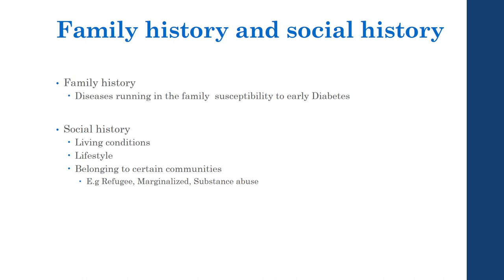Family history is important to note when certain diseases run in the family, such as hemophilia or susceptibility to early-onset diabetes. In social history, note the patient's living conditions, lifestyle, and whether they belong to any marginalized community or group. Social history will help directly or indirectly in managing the treatment plan based on the patient's social background.